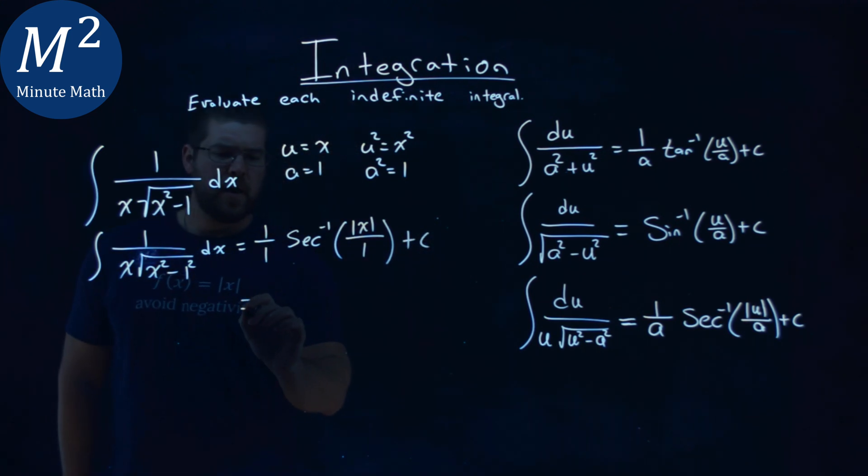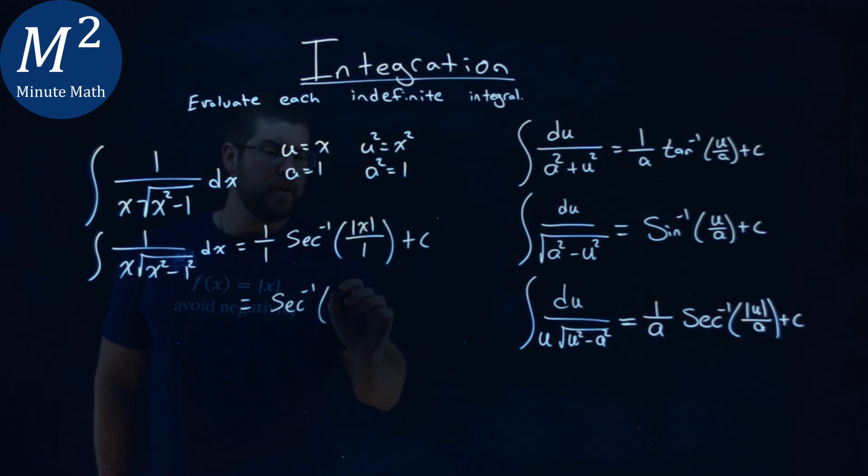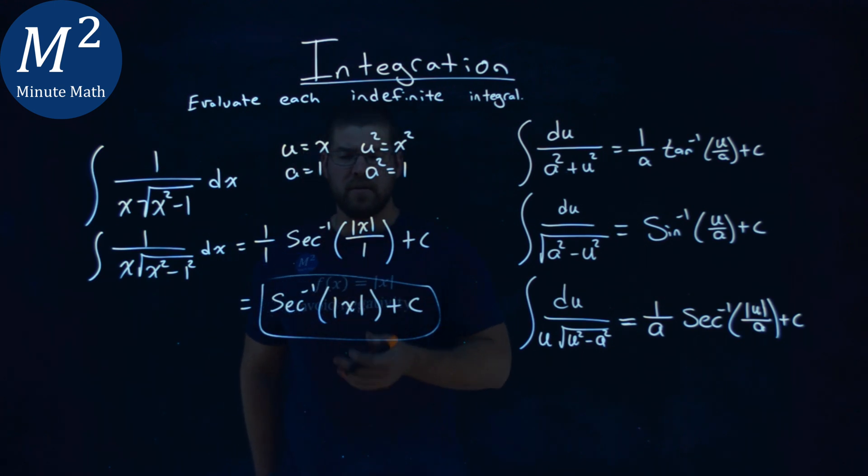Now we can simplify this up a little bit. 1 over 1 is 1. Don't need to write that coefficient. So we have the arc secant of, well, absolute value of x over 1 is just the absolute value of x plus c. And so my final answer here is the arc secant of the absolute value of x plus c.